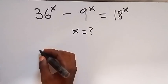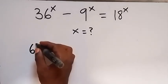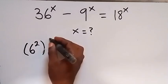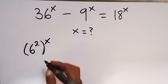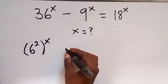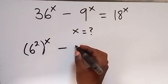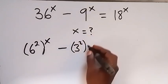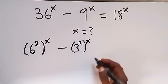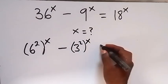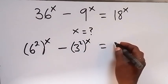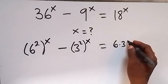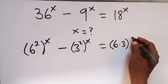Let's rewrite it. This is 6 squared then raised to power x, because 6 squared is 6 times 6 which is 36. Then minus, we have 3 squared then raised to power x — 3 squared is 3 times 3, that's 9. On the right side, let's write 18 as 6 times 3, then all raised to power x.